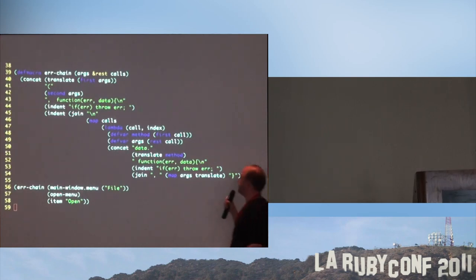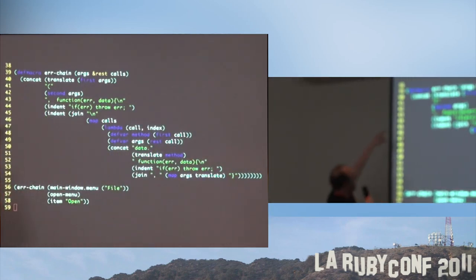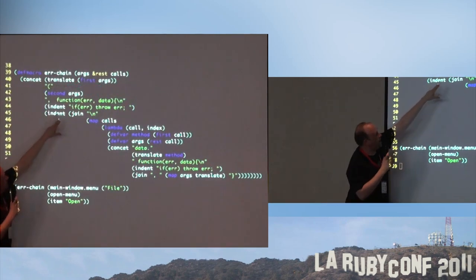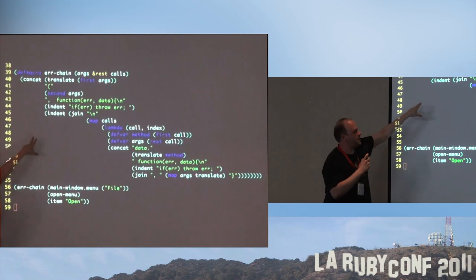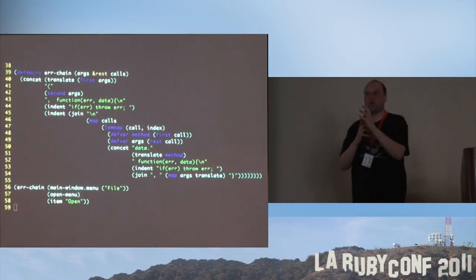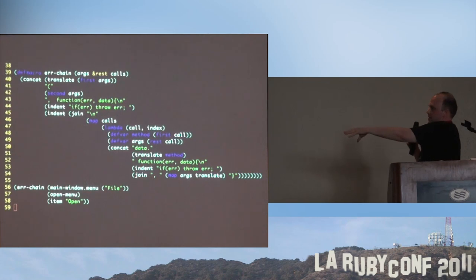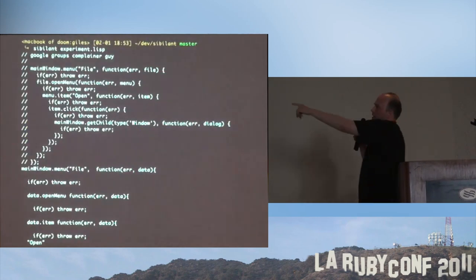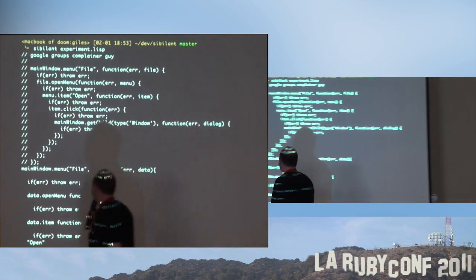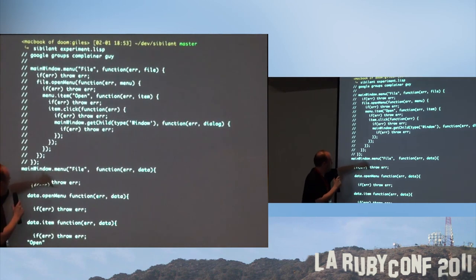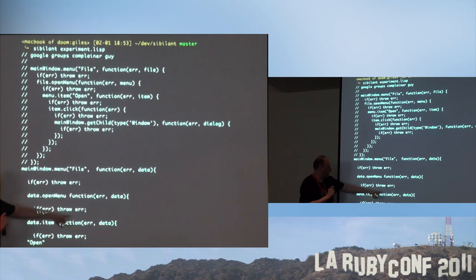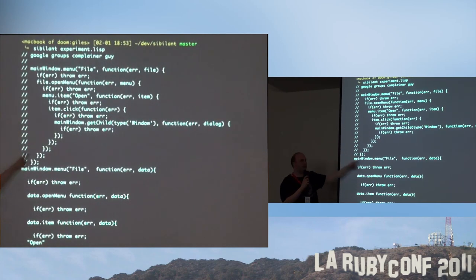Basically, this part is the money shot: function error data if error throw error. This is saying: every time you process one of these calls, interpolate this little if error throw error thing. Here I am running it — sibilant experiment.lisp, it does all the comments. What you have is: main window menu file function error data if error throw error; data open menu function error data if error throw error. And you can see by looking at the top that this is what he was complaining about not being able to do. I did that in 30 minutes — it was the first macro I had ever written in my life.